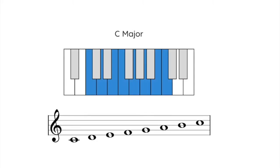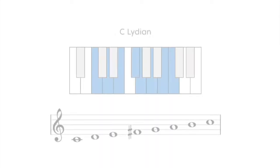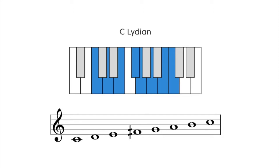Let's start with a C major scale. To build a Lydian scale, all you need to do is raise the fourth note by one half step. Let's give this a listen.